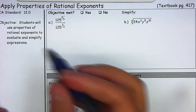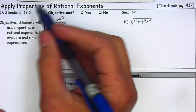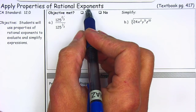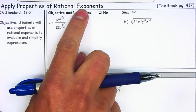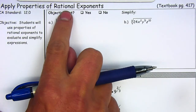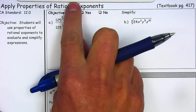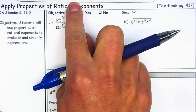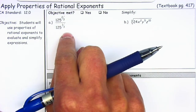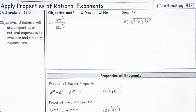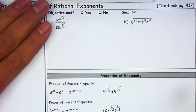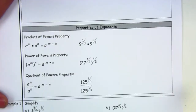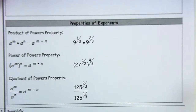Good morning. Today we are going to be covering rational exponents. We have covered on the last chapter just exponents. Today our rational exponents — the rational comes from the word ratio, which means that we are going to be having fractions as the exponents. And we're going to be covering three of the basic properties of exponents and we're going to apply those to rational exponents.